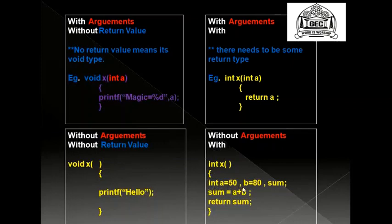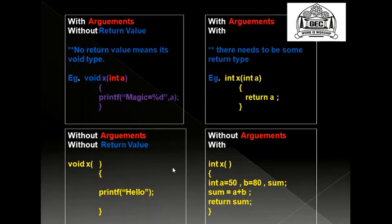Here 'a' came from the main; but since this function has no arguments, you have to locally declare it — so a equals 50. You could say return a, or in this case it uses b and sum: sum equals a plus b, then return sum. Without arguments means the bracket is empty; with arguments means there is something in the bracket. Without return value means void; with return value means int, char, float, or double — and whenever you use a return type, make sure you are returning something.